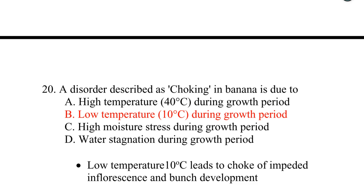Question 20. A disorder described as choking in banana is due to low temperature — 10 degrees Celsius — during the growth period. Low temperature at 10°C leads to choke of impeded inflorescences and bunch development.